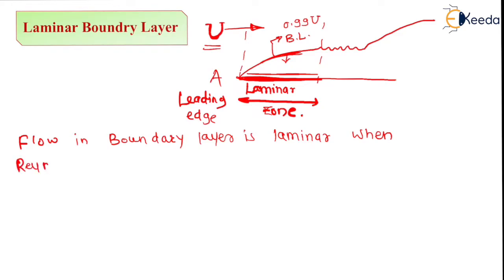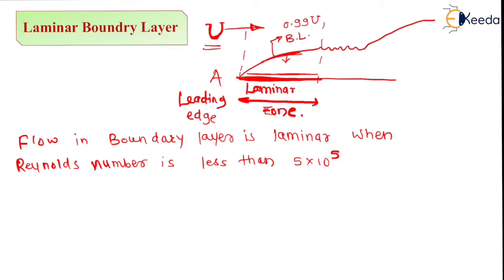Flow in the boundary layer is laminar when the Reynolds number is less than 5 × 10⁵. The formula for Reynolds number is Re = ρVL/μ, where L is the characteristic length.